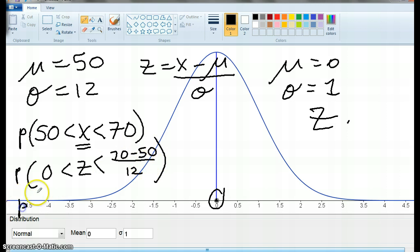So the probability of 0 being Z to 70 minus 50, you can do it on the calculator, is 20 divided by 12. So what's 20 divided by 12? 1.666. So now we need to look that up on the table.